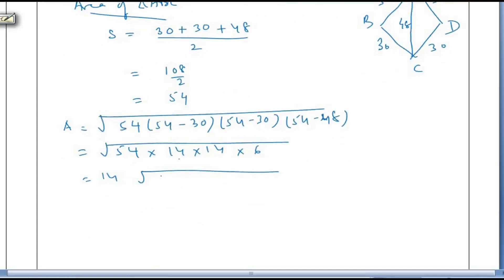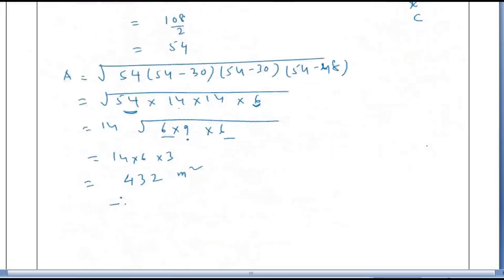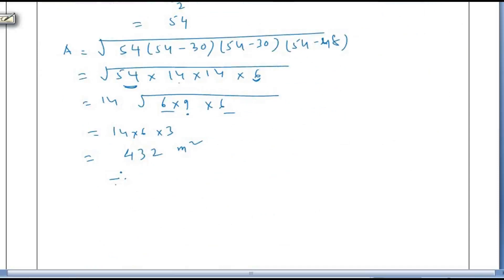So 6 times 9 is 54, and this is 6. The pair has become 6, so take a 6 out. And 9 square root is 3. So 14 into 6 into 3. That is, area of triangle is 432 m². Now, the two triangles are equal. Remember, in rectangle, rhombus, parallelogram, the triangle area doubled gives you the whole area. Got it? Area of full rhombus ABCD is equal to 2 into 432, which is equal to 864 m².